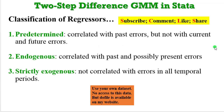Before we go into the practical example, let me explain how regressors are classified in GMM. Predetermined regressors are assumed to be correlated with past errors but not with current and future errors. Endogenous regressors are assumed to be correlated with past and possibly present errors. Strictly exogenous regressors do not have any correlation with errors across all time periods.